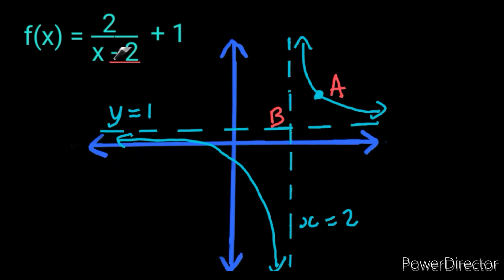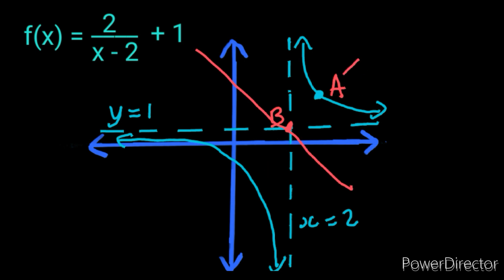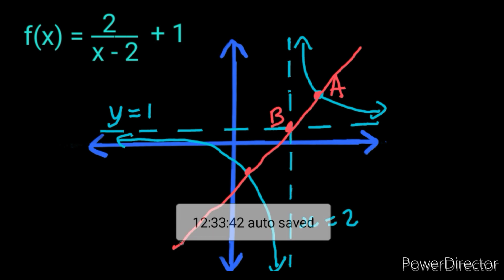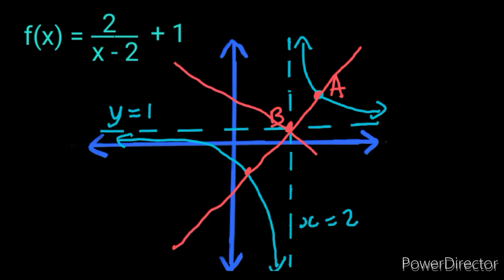They can give you a graph f(x) = 2/(x - 2) + 1 and ask you to find point A, the closest point to B. Now B is the meeting point of the asymptotes — it is also where the axes of symmetry meet. The closest point to the meeting point of the asymptotes is actually the intersection of one of the axes of symmetry and the hyperbola.